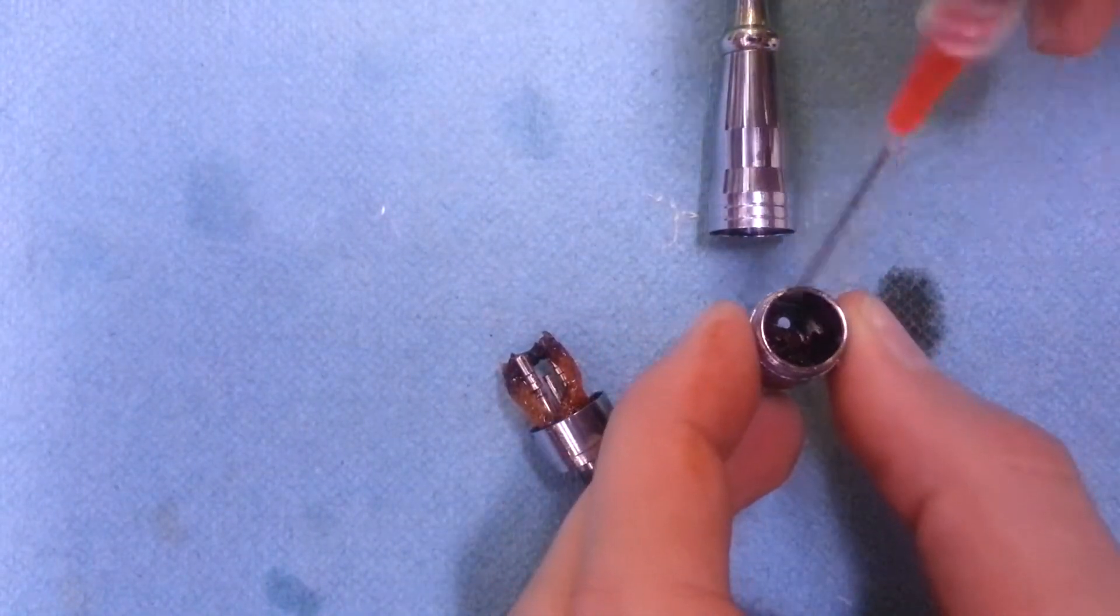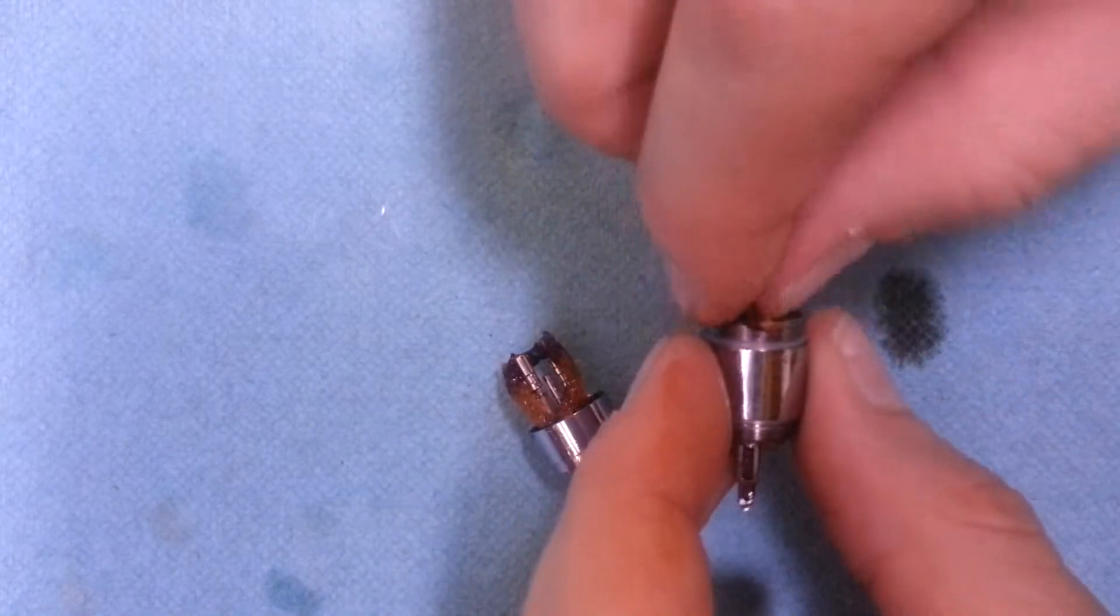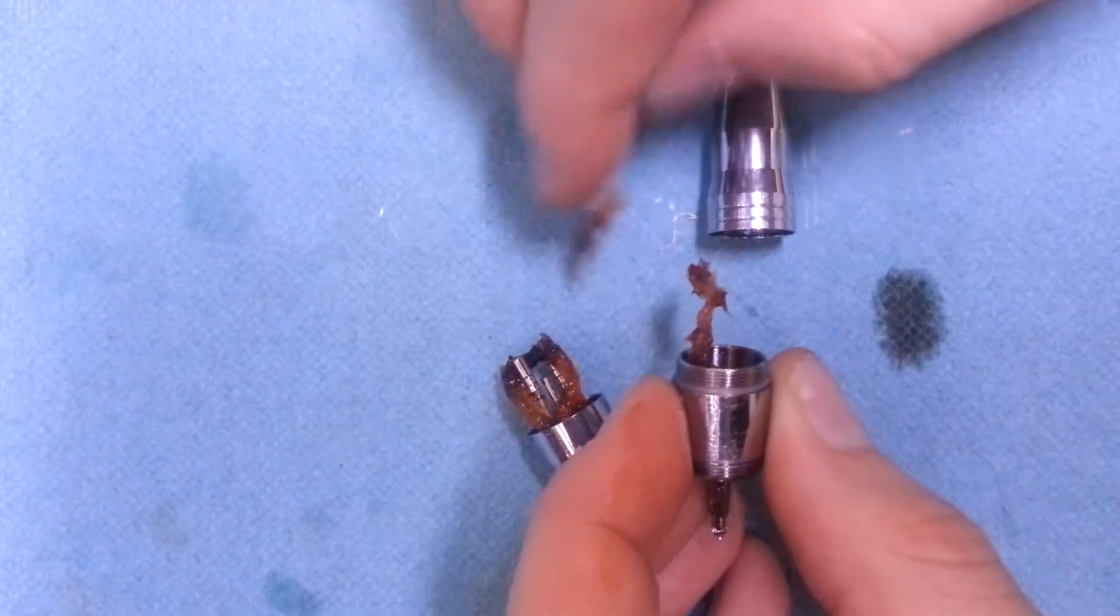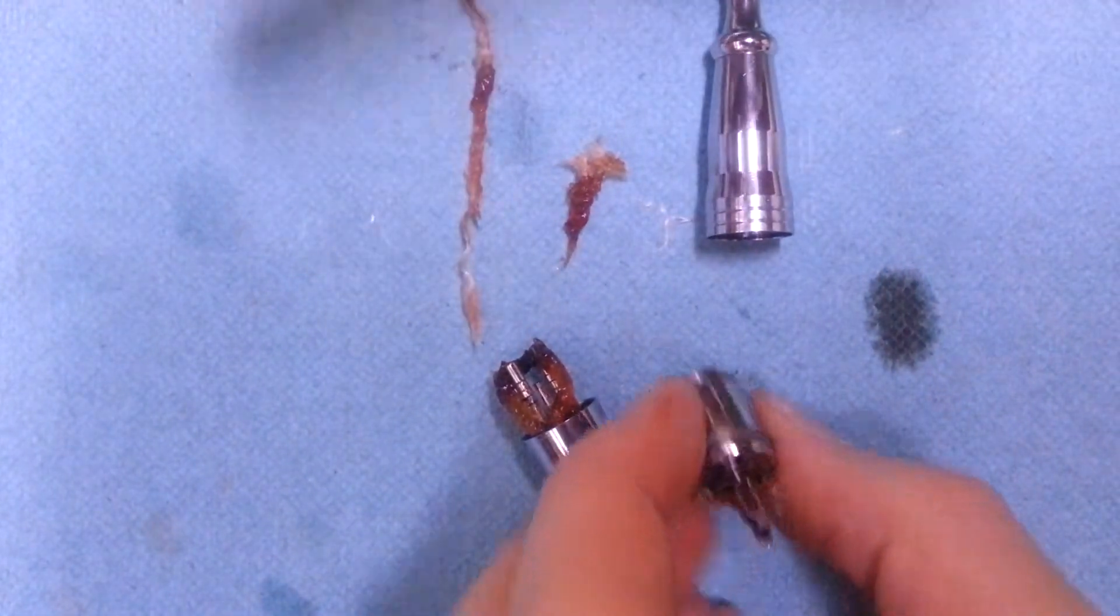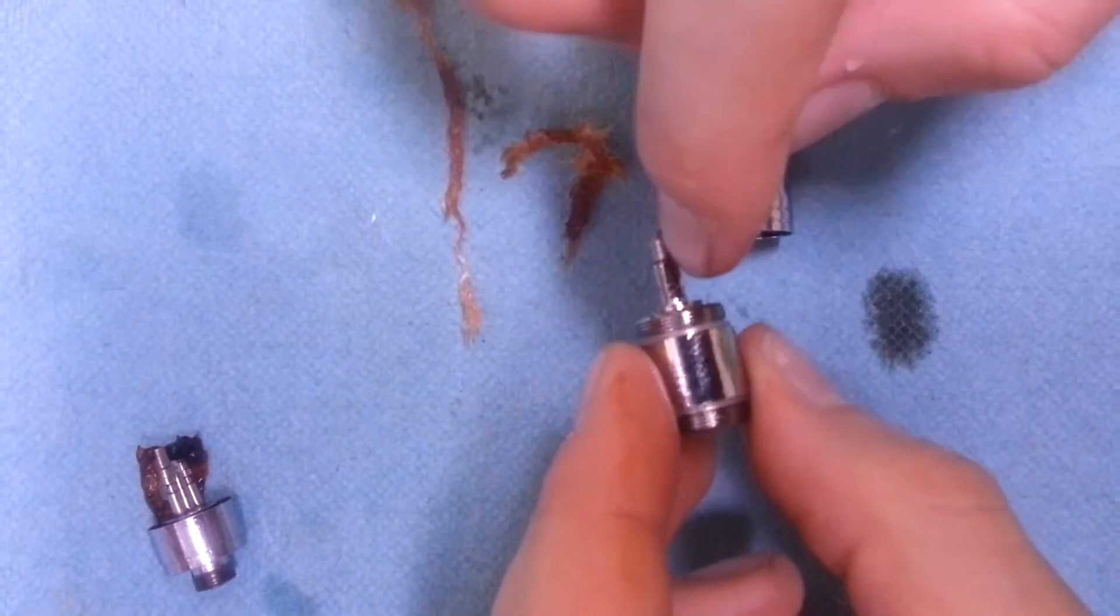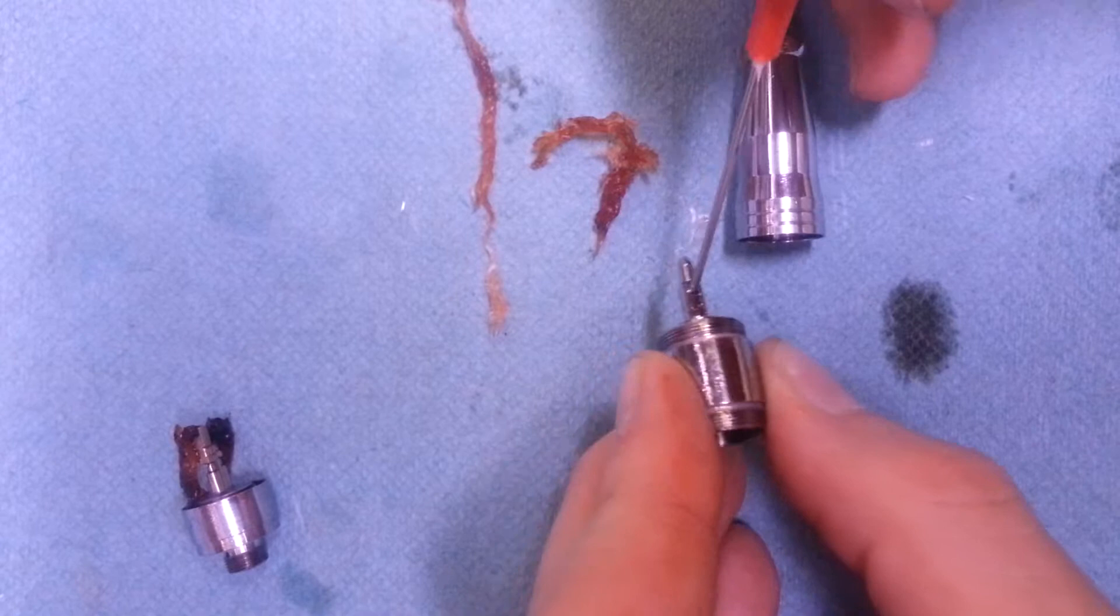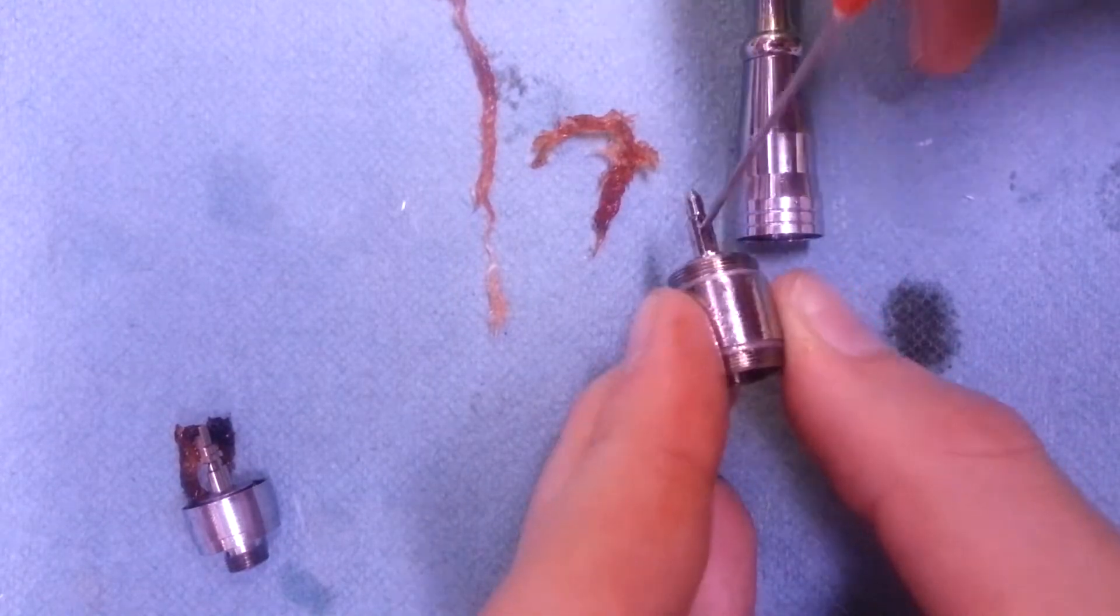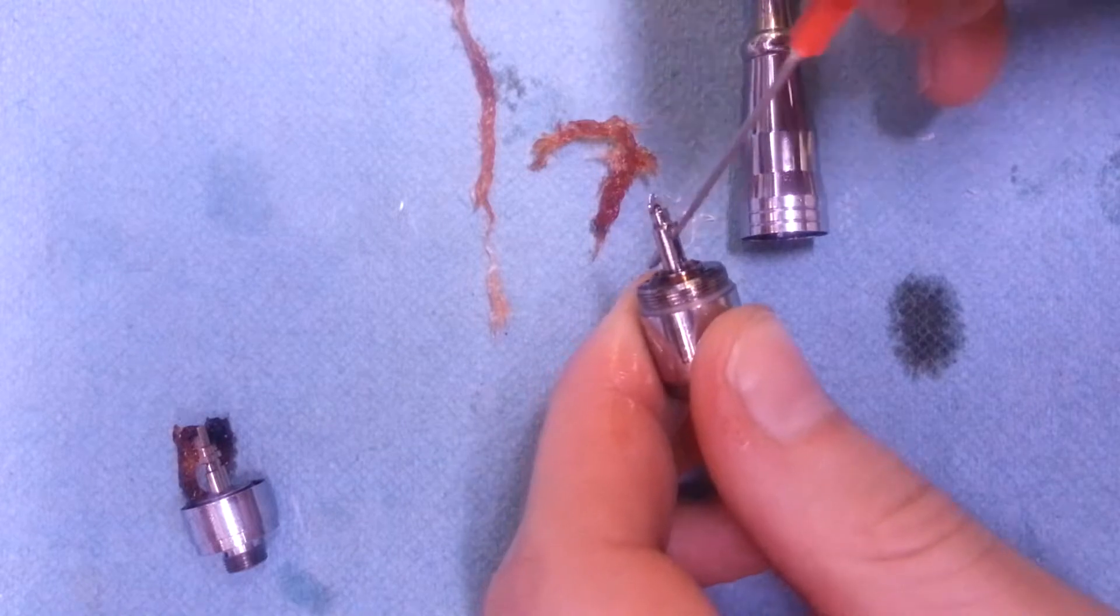Basically, I removed the old wick and put in my own. I'll go ahead and remove this one too. Just like this. I just pulled it out. And there's still a little bit of wick inside of this thing. But you can just basically shove that through just like that.